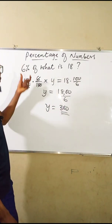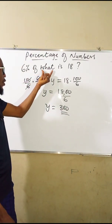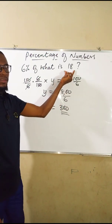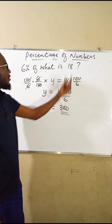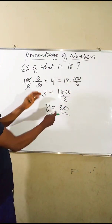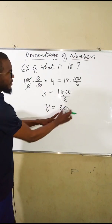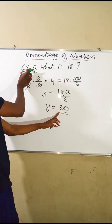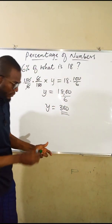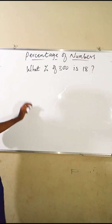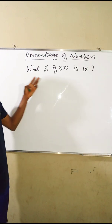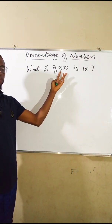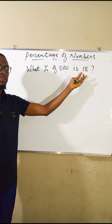So 6 percent of 300 is 18. Now, what if we are given the base and the result and asked to find the percentage? The question is: what percentage of 300 is 18?